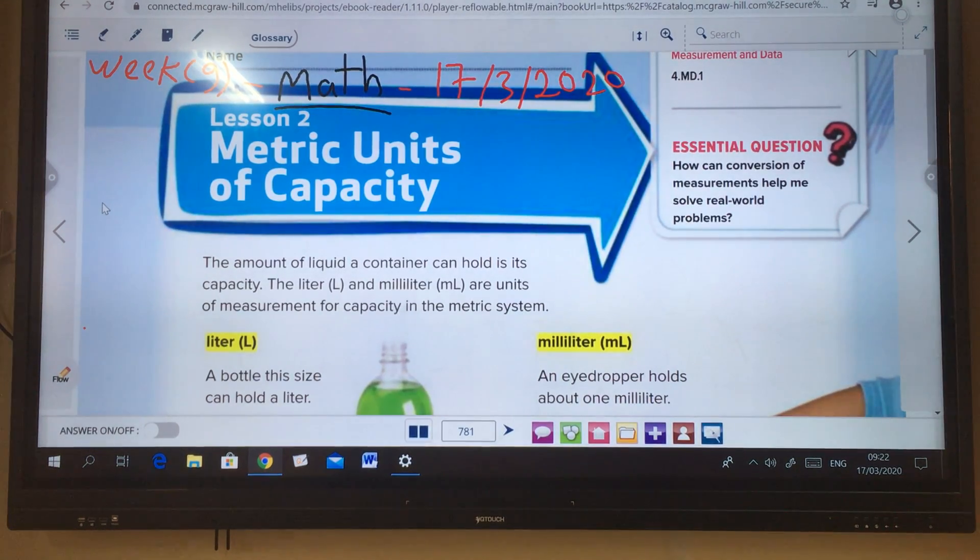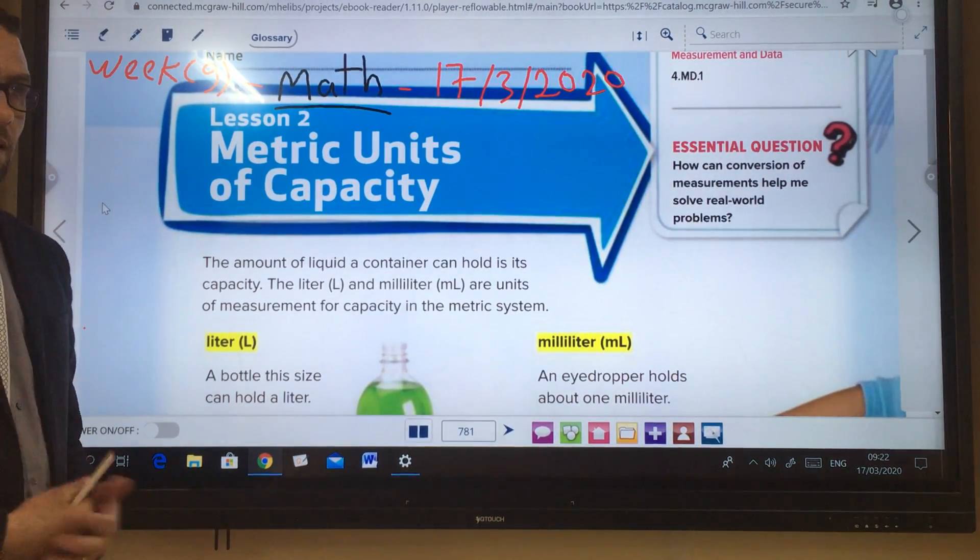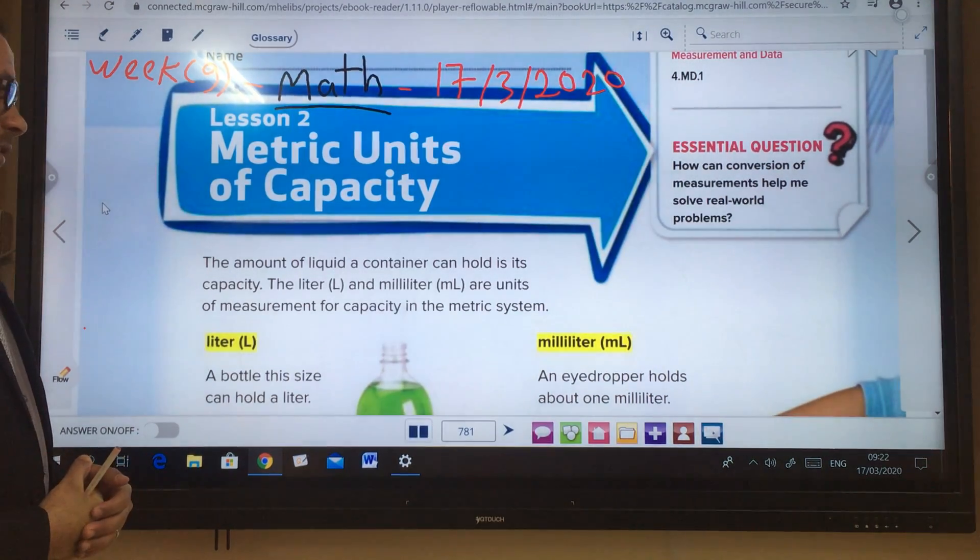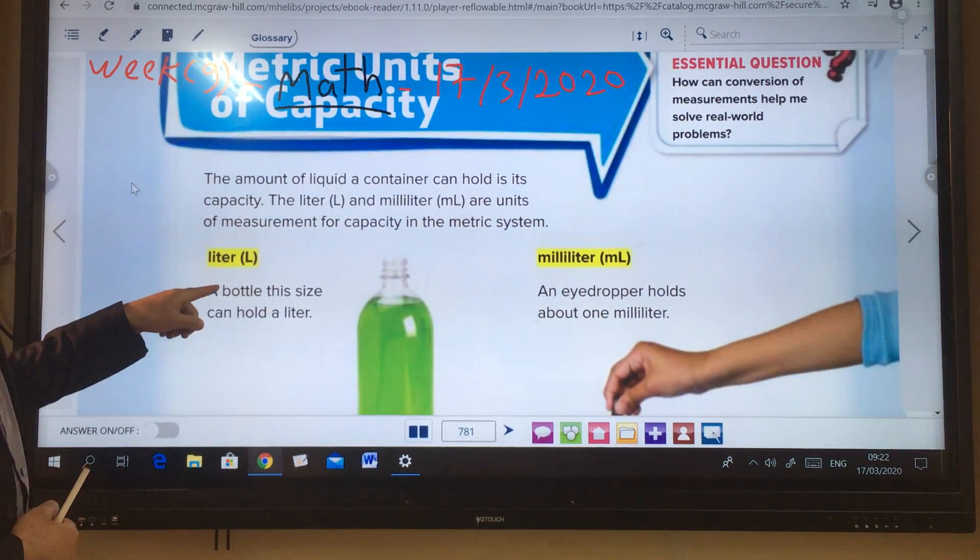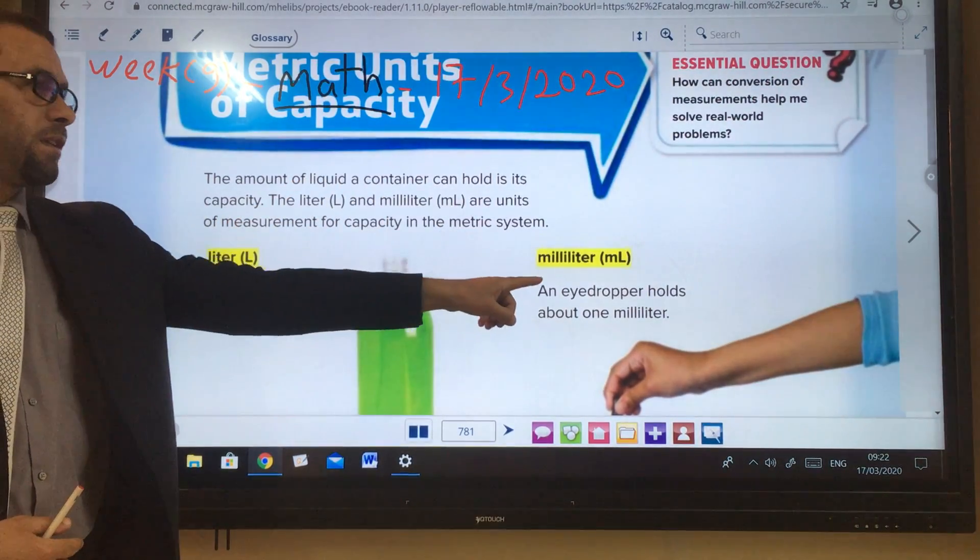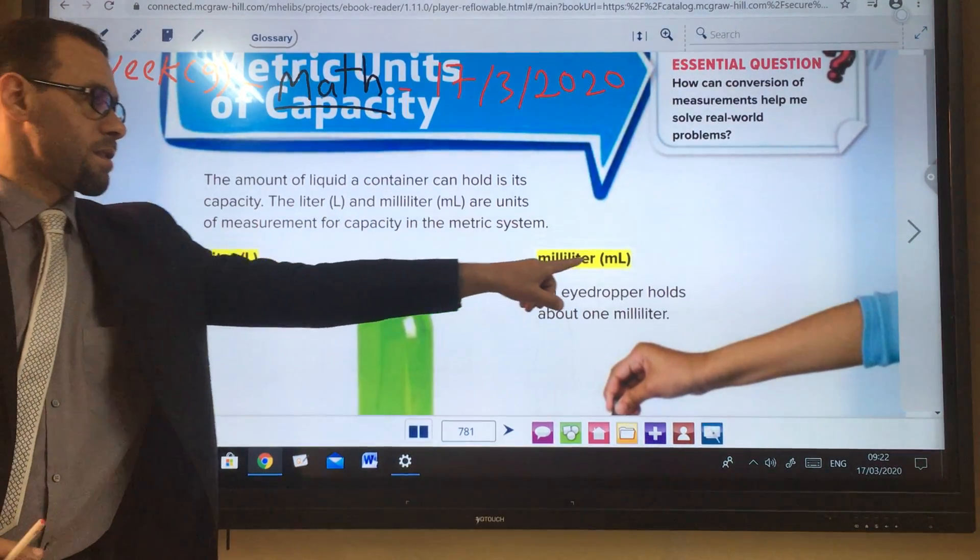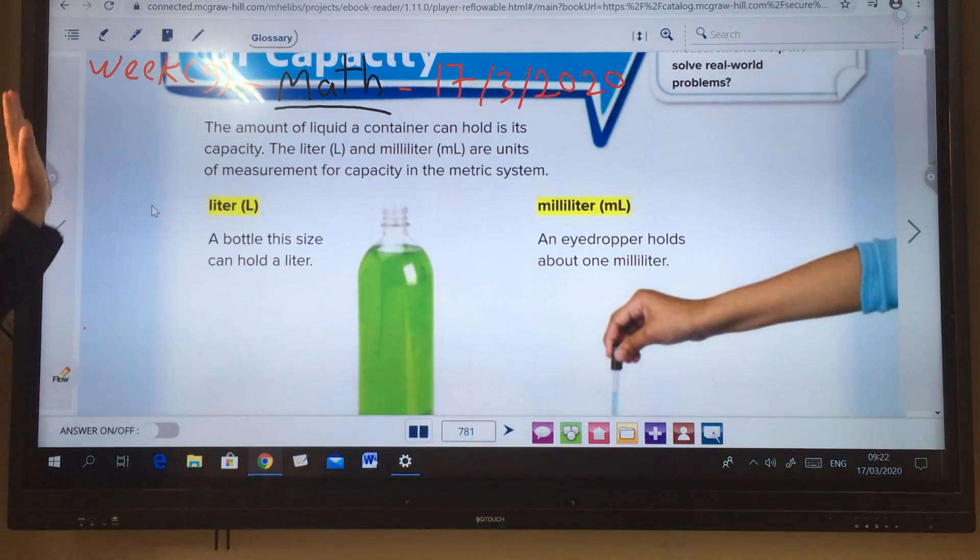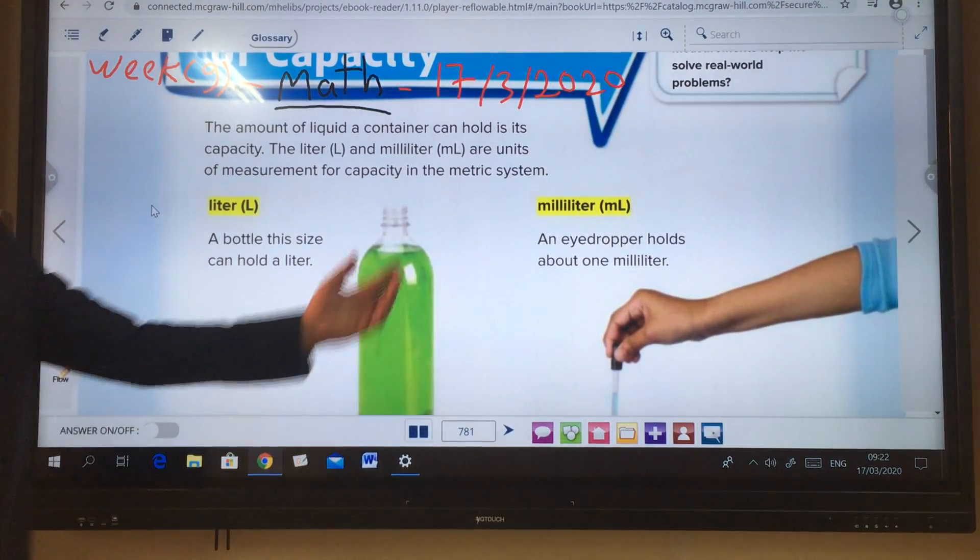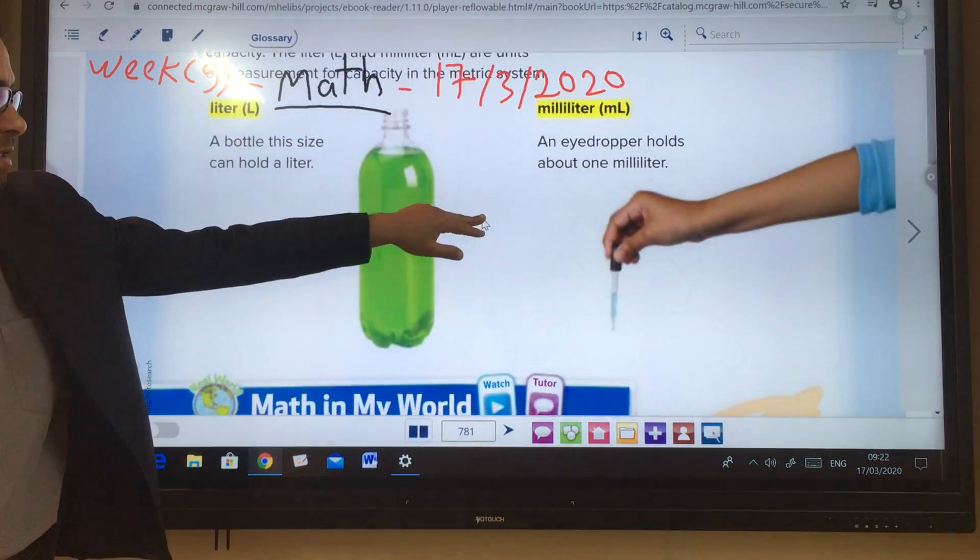And the capacity, to measure it, we use the units. What units of the capacity? As you see here, units of capacity is liter and milliliter. Liter, abbreviated as L, milliliters abbreviated as mL. We use this for big size and this one for small size like drops.